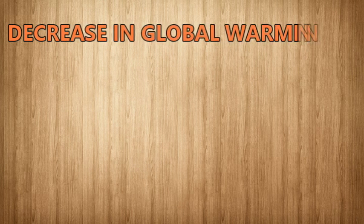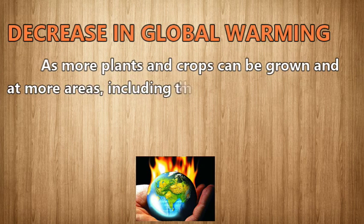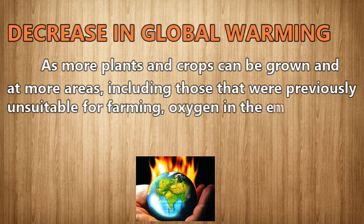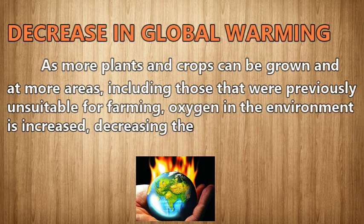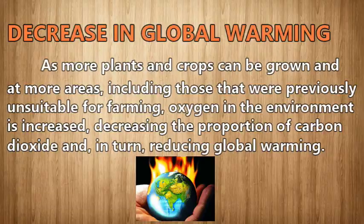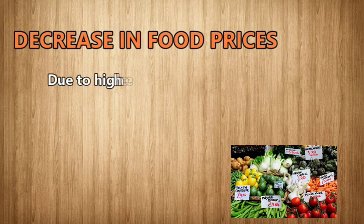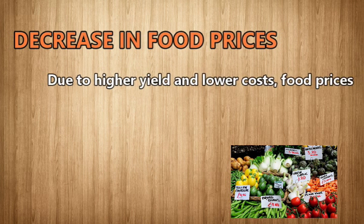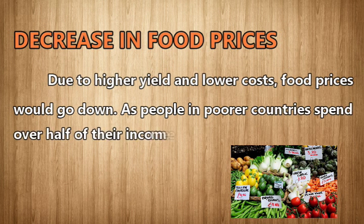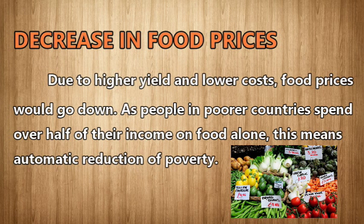Decrease in global warming: as more plants and crops can be grown in more areas, including those previously unsuitable for farming, oxygen in the environment is increased, decreasing the proportion of carbon dioxide and in turn reducing global warming. Decrease in food prices: due to higher yields and lower costs, food prices would go down. As people in poorer countries spend over half of their income on food alone, this means an automatic reduction of poverty.